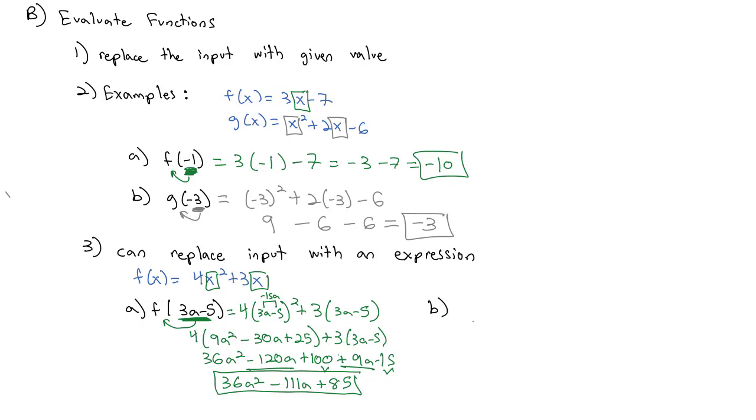We can even evaluate our function with an input that has the same variable as our function. We can find f(2x³), for example. Here, the 2x³ is going into the function anywhere we see the variable. So the function was 4 times stuff squared plus 3 times stuff. That stuff is the input of 2x³.